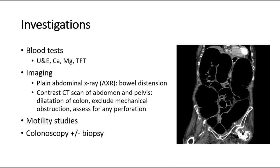For investigations, blood tests should be performed to assess for biochemical or endocrine causes, including urea and electrolytes, calcium and magnesium levels, and thyroid function tests. For imaging, plain abdominal films will show bowel distension but cannot differentiate from mechanical obstruction. Patients should undergo an abdominal pelvis CT scan with IV contrast, which will show dilatation of the colon, definitively exclude mechanical obstruction, and assess for complications such as perforation.